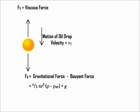Using Stokes law, Fv = 6πηrv1, where r equals radius of oil drop and η equals viscosity of air. When the oil drop falls with constant velocity, then there should be no force acting on it.